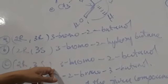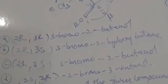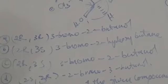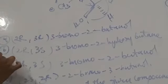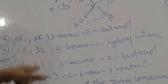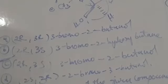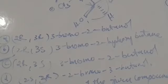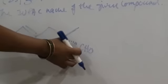3-S, 3-Bromo-2-Butanol. So the correct configuration is 2-R, 3-S, 3-Bromo-2-Butanol. Next, IUPAC name of the given compound — here also we have to give the numbering starting from the functional group: 1, 2, 3, 4, 5, 6.